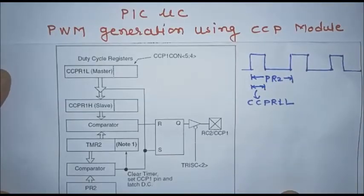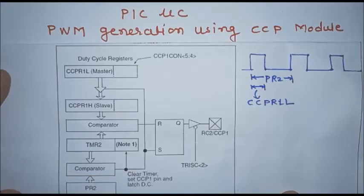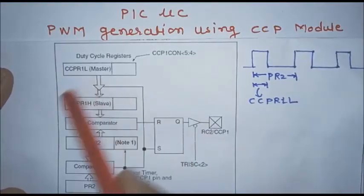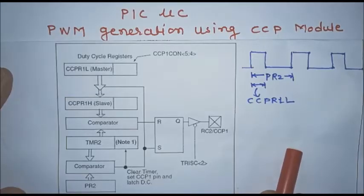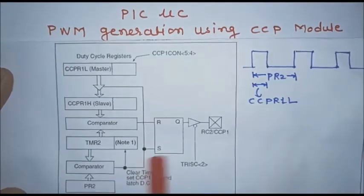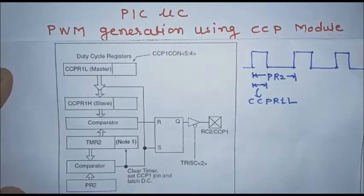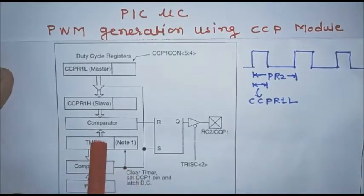PWM signal generation using the CCP module of the PIC microcontroller. CCP stands for Capture, Compare, and PWM module. This block diagram explains the operation of PWM generation. This PWM signal can be used to control the speed of a DC motor or to control intensity. This PWM or CCP module uses Timer 2.